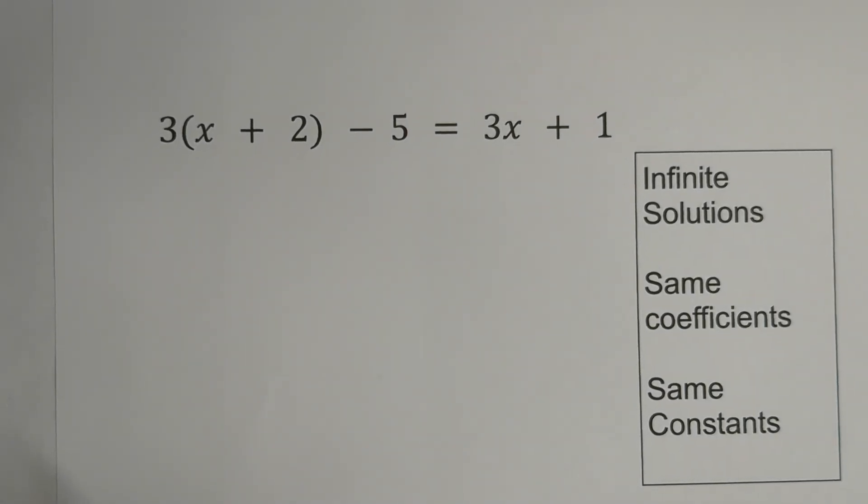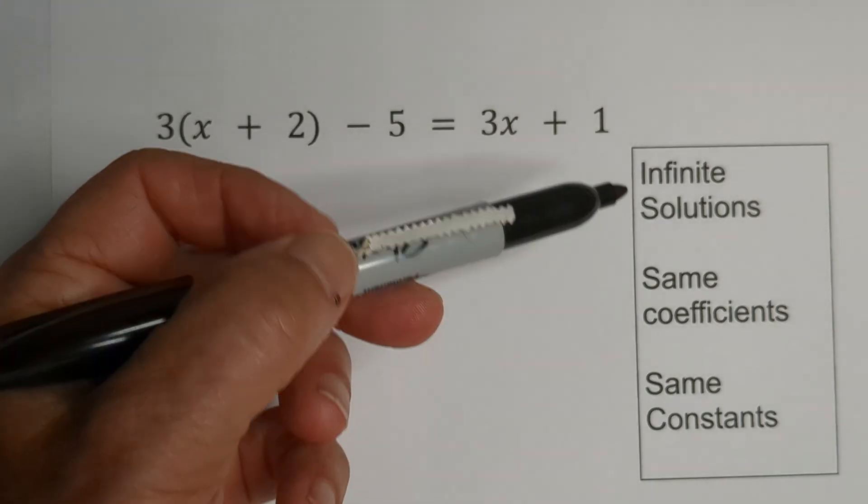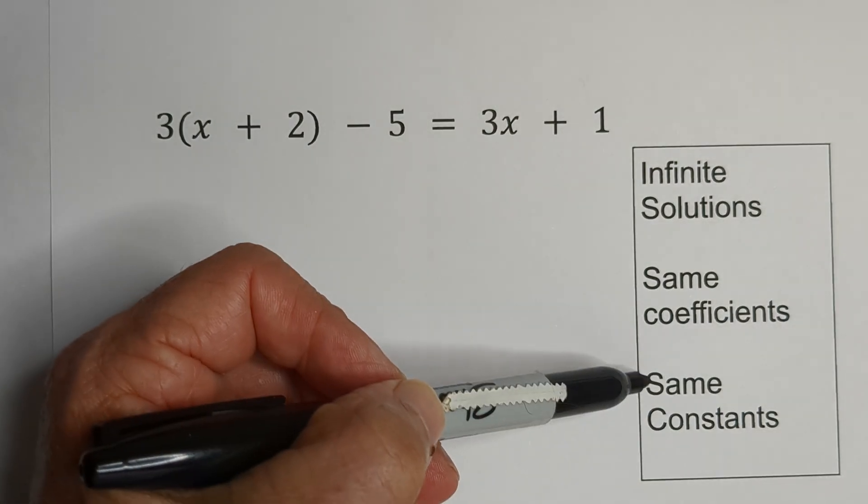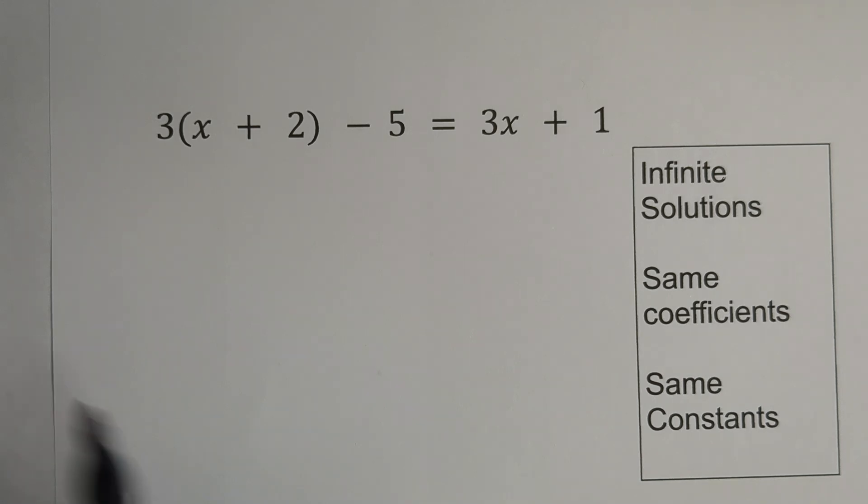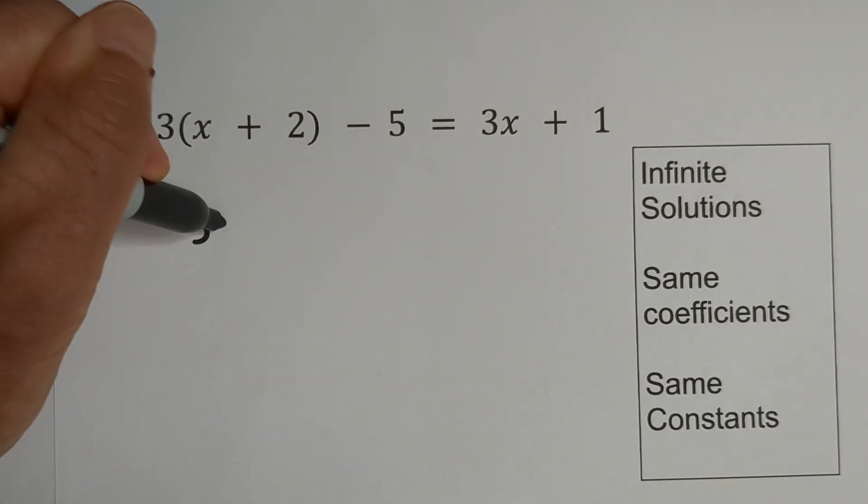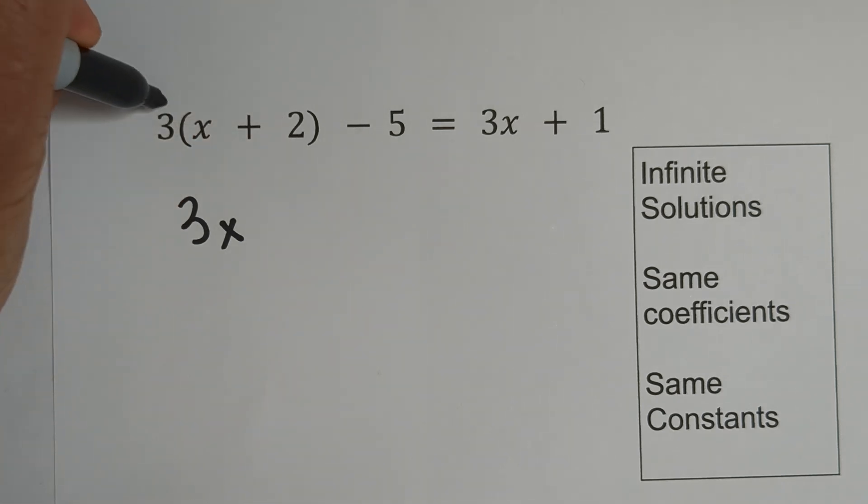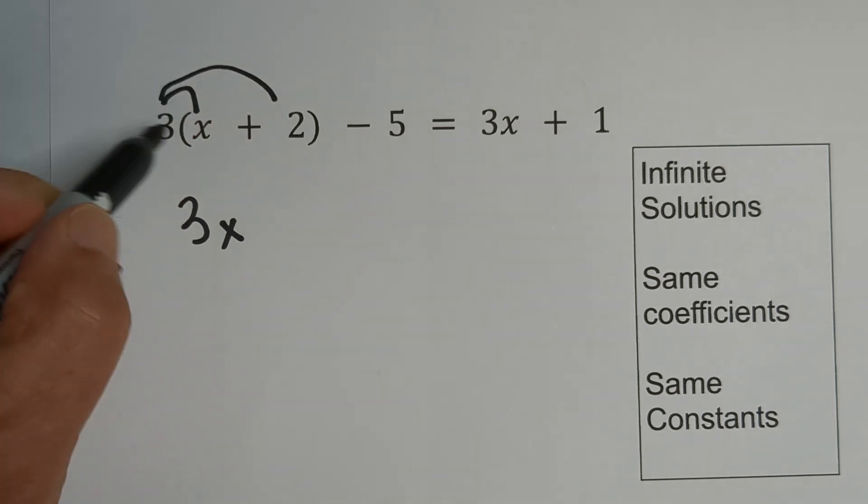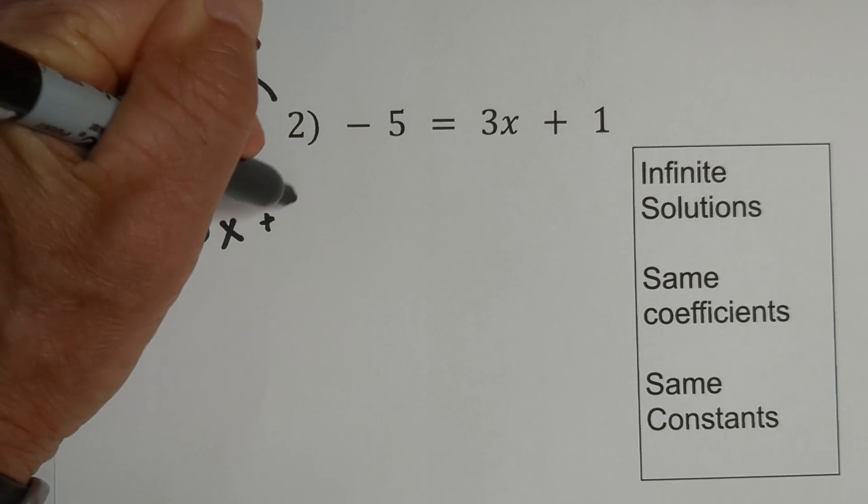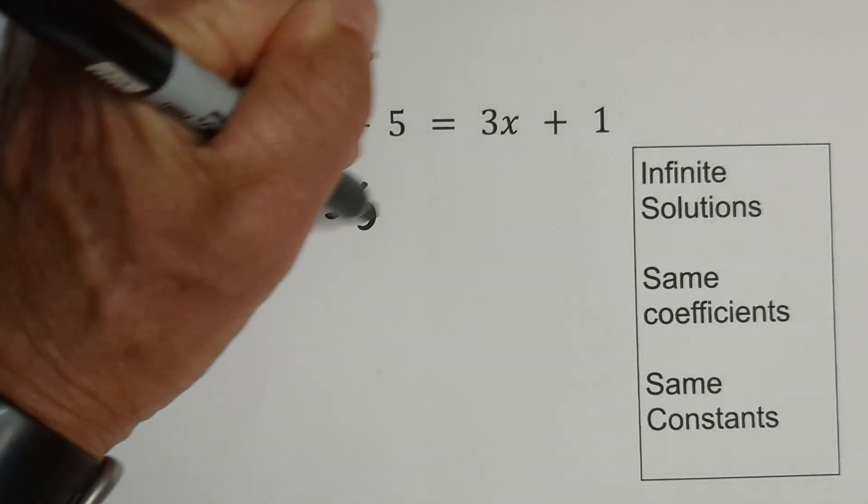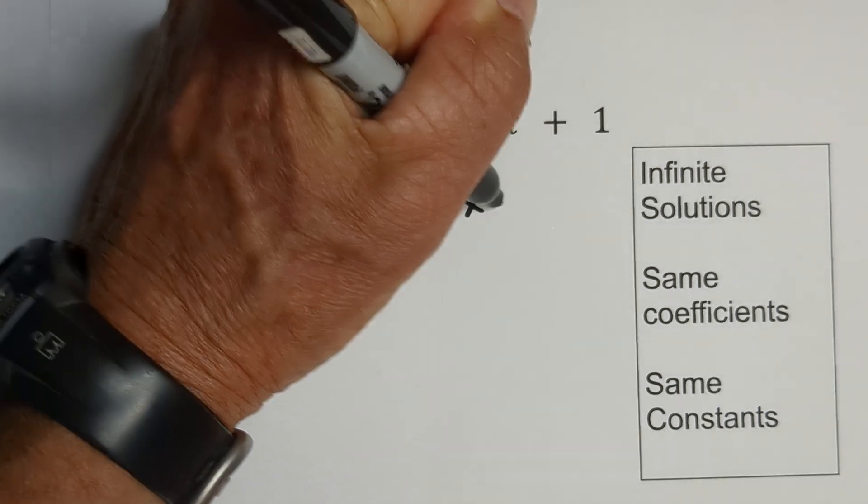Now let's look at an infinite number of solutions. With this, you have same coefficients, same constants. We first need to simplify. We're going to distribute three times x is 3x, three times two is a positive six, minus five, equals 3x plus one.